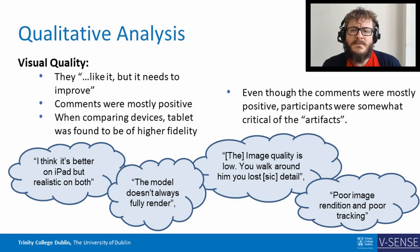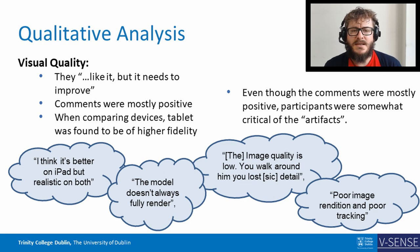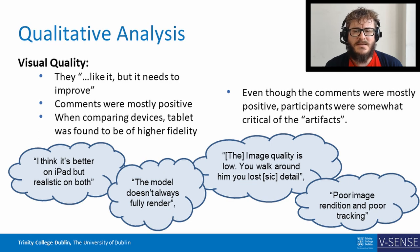The qualitative open-ended responses explored topics of visual quality, technological limitations, and immersion. Regarding the visual quality of Jonathan Swift's representation, the participants revealed that they liked it but felt it needs to improve. Overall responses towards the character's quality were mostly positive, but a number of artefacts detracted from the overall experience.